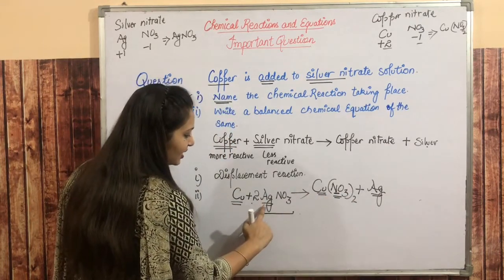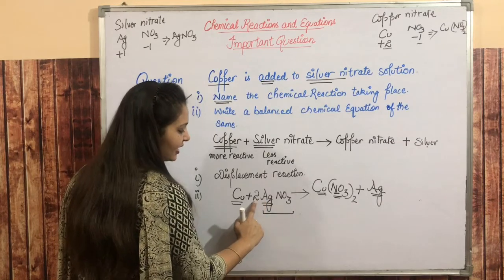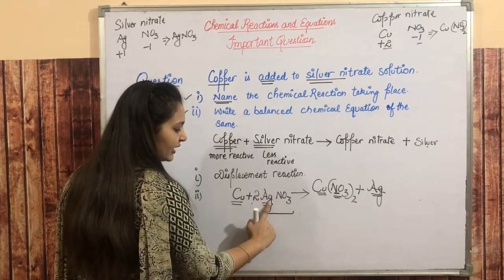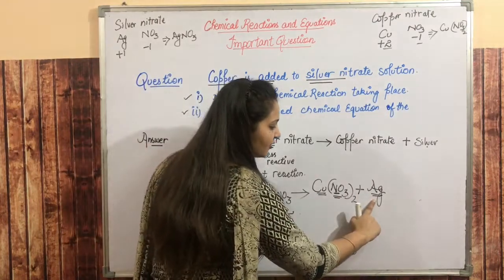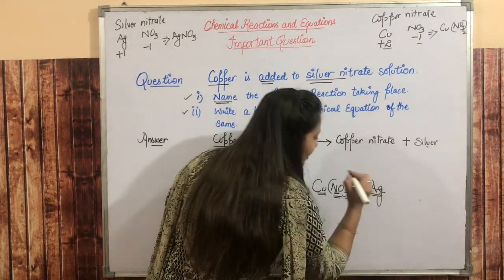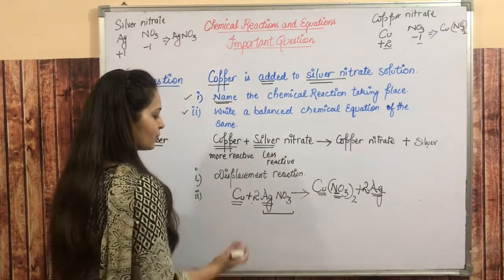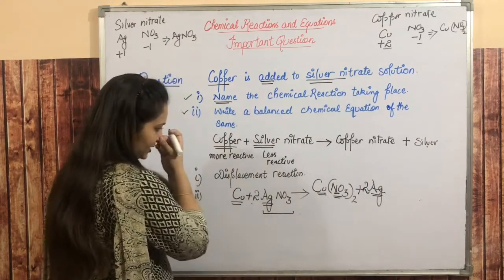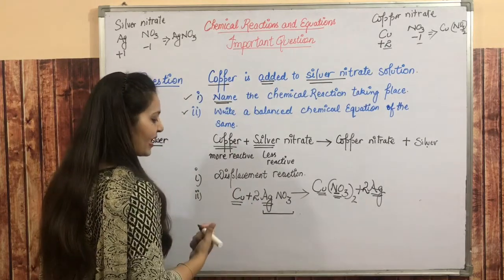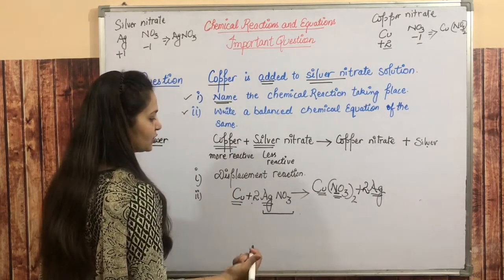But now what is silver? Two. So silver atoms two, but here we will write two. Copper also one. So this equation has balanced chemical equation.